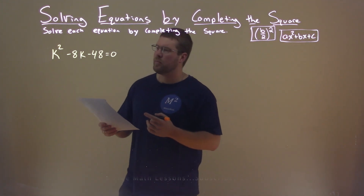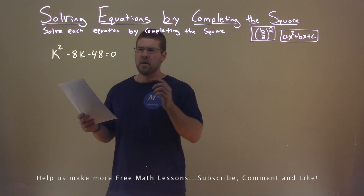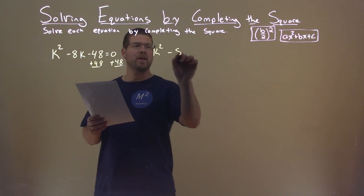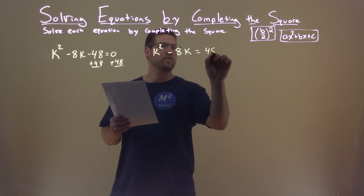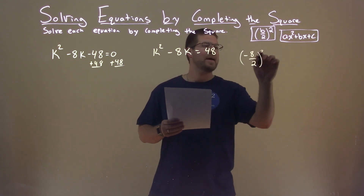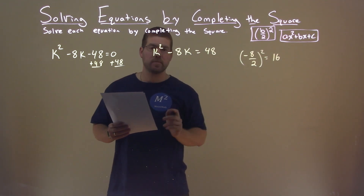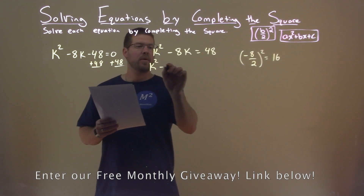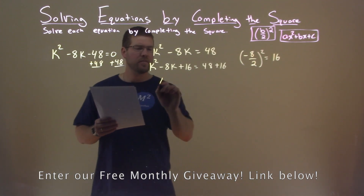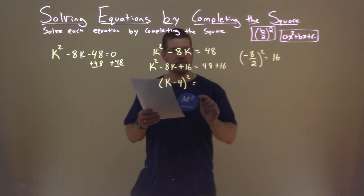We're given this problem right here: k squared minus 8k minus 48 equals 0, and we want to solve this by completing the square. First thing I'm going to do is add 48 to both sides, giving us k squared minus 8k equals positive 48. I'm also going to look at my B value, negative 8. Dividing by 2 and squaring that comes out to be positive 16. So I'm going to add 16 to both sides: k squared minus 8k plus 16 equals 48 plus 16. The left-hand side is now a perfect square — k minus 4, all squared — and 48 plus 16 is 64.